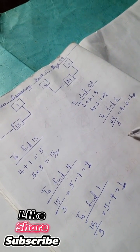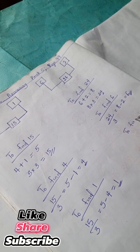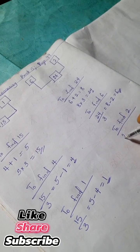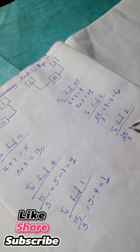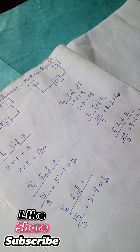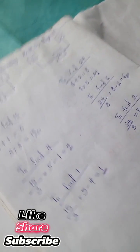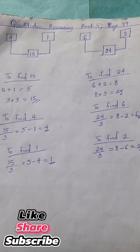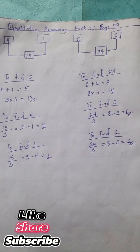Lastly, to find 2, we have 24 divided by 3 equals 8. 8 minus 6 equals 2. Please do well to subscribe to this channel for more quantitative reasoning solutions and problems.